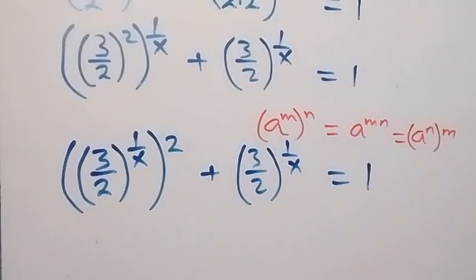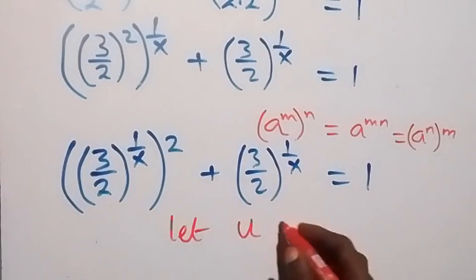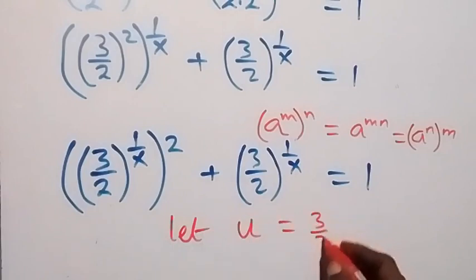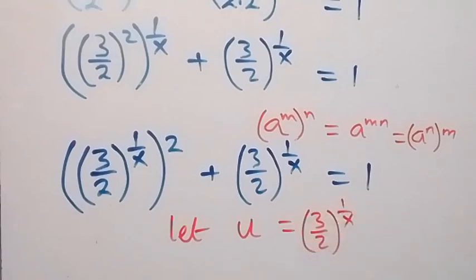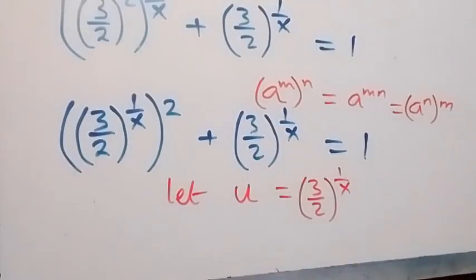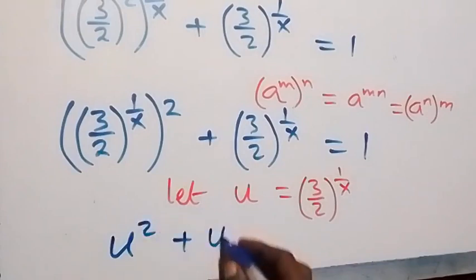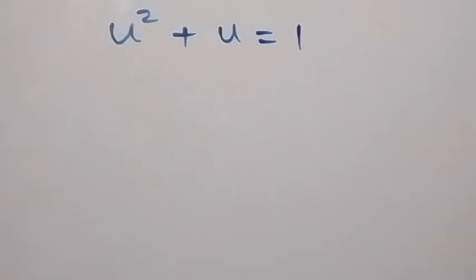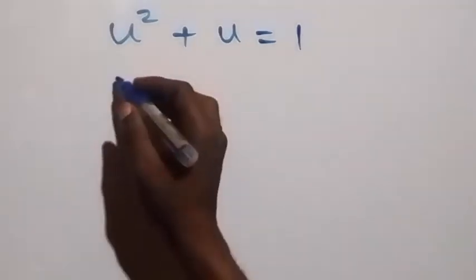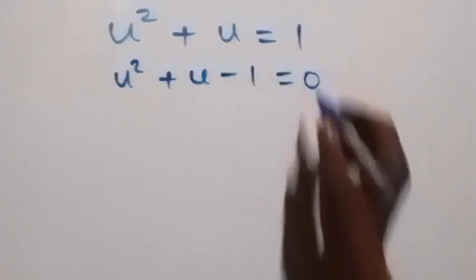Here we have (3 over 2) raised to power 1 over x. We can select a letter u, where u equals (3 over 2) raised to power 1 over x. Then what we have becomes u squared plus u equals 1. Taking 1 to the other side, it becomes u squared plus u minus 1 equals 0.